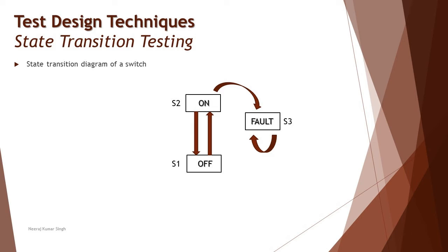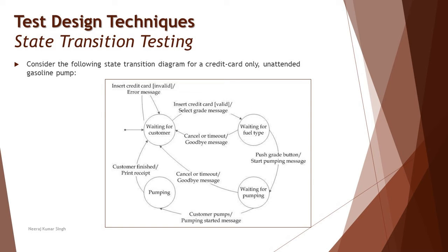When you turn the switch on and it burns out, it moves into the faulty state and remains faulty forever, with no return path to any other state. From this diagram, we derive four valid transitions. All other missing transitions — fault to on, fault to off, off to fault — are invalid transitions. Since S3 has a self-loop (fault to fault), that counts as one valid transition, giving us the total test case count.